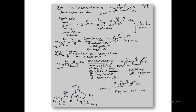Now we go to chiral drug number 13: the R enantiomer of indacrinone. Indacrinone is related to indene — a benzene ring linked with a five-membered ring having one benzylic position and one C=O group. The parent skeleton is called indanone. It is antihypertensive — used to bring high blood pressure down to normal levels.